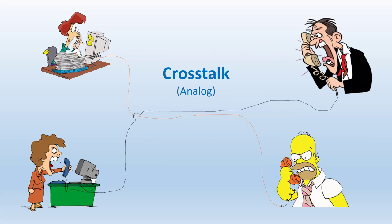Here's another example of crosstalk — a conversation between two people on one wire, and another conversation between two other people, with some wires running alongside each other. In an analog situation like POTS — plain old telephone service — crosstalk can be annoying but you can still carry on. You're going to hear the other conversation, but you'll still be able to hear your original content.